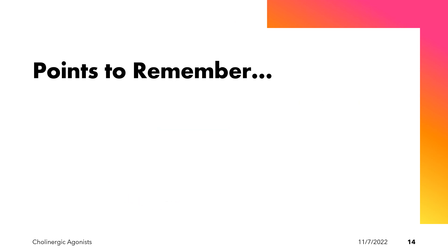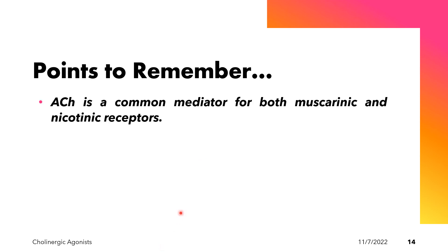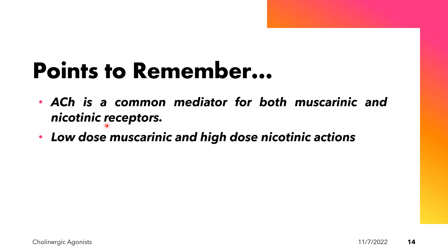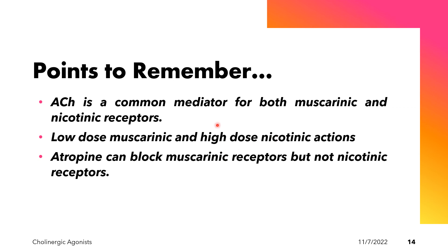Key points to remember: acetylcholine is a common mediator for both muscarinic and nicotinic receptors — it acts on both and is not selective. A low dose of acetylcholine produces muscarinic effects, while a high dose produces nicotinic effects. Atropine is an anti-muscarinic or anticholinergic drug that blocks muscarinic receptors but not nicotinic receptors.